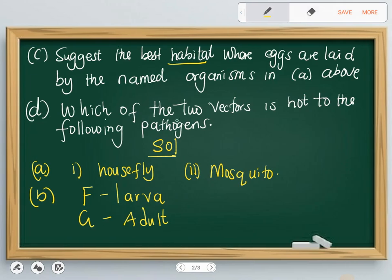Part D: Which of the two vectors is host to the following pathogens? Number one: plasmodium. Number two: vibrio cholera.